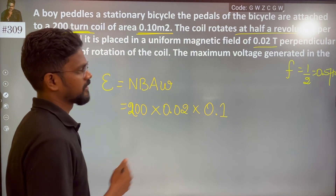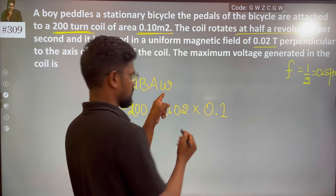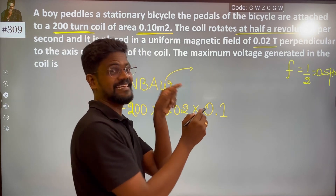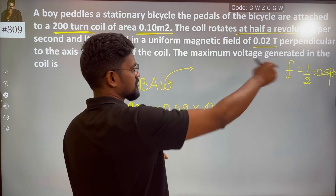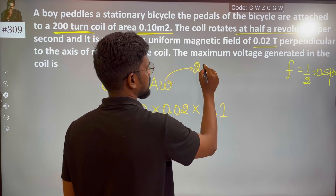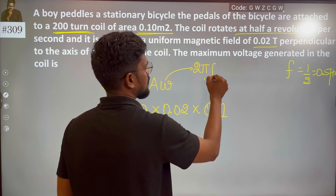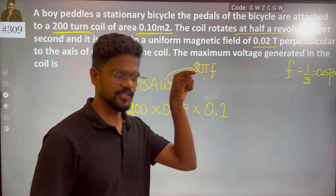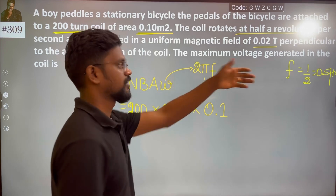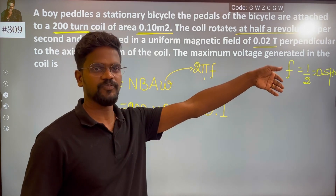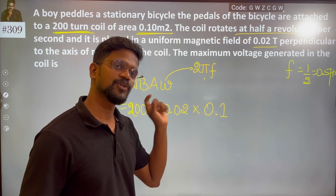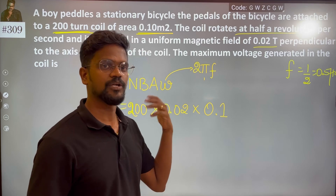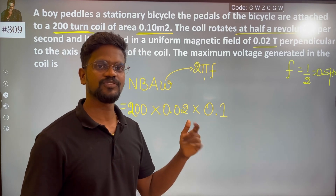The frequency term requires the angular speed omega. Omega is equal to 2πf, or equivalently 2π divided by T, where frequency f equals 1/T. Since we are talking about frequency here, we cannot substitute omega directly. So instead of omega, I can replace it with 2πf.